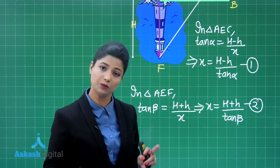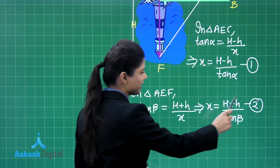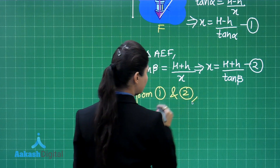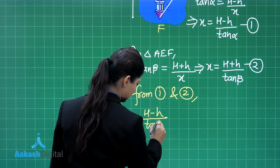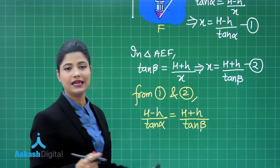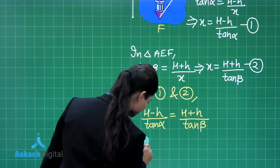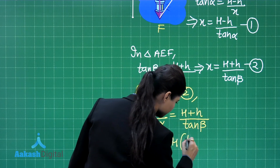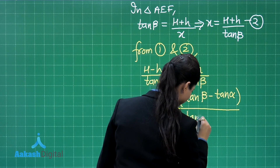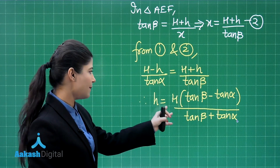From equations 1 and 2, x is the same in both cases. Equating the right-hand sides: (H minus h) upon tan α equals (H plus h) upon tan β. We need the height of the tower, small h, with the lighthouse height capital H given. Simplifying this equation gives small h equal to capital H times (tan β minus tan α) divided by (tan β plus tan α).